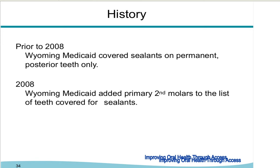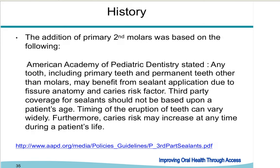We monitor the amount spent on one-surface fillings for bicuspids to see if that amount is increasing since those teeth are no longer being sealed. We have not had any increases since 2010 — in fact, seen a decline from about $63,000 spent in 2010 on one-surface fillings to about $47,000 in 2013. The addition of primary second molars was based on recommendations and guidelines from the American Academy of Pediatric Dentistry, which stated that any tooth — including primary and permanent — may benefit from sealant application due to anatomy and caries risk.